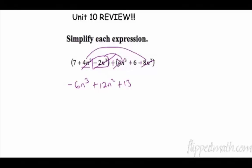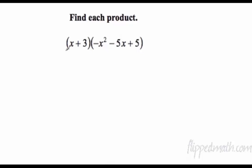And then 7 plus 6 is 13. That's how you would do an addition one as well, except you wouldn't have to change anything at the beginning. Alright, find each product. Remember you could do a double distribute or you could set up the table. I'll set up the table: x plus 3, and then across the top we have negative x squared minus 5x.